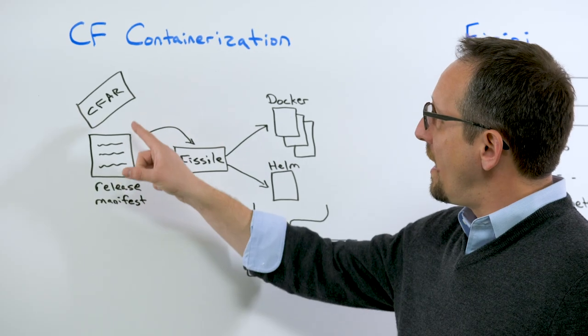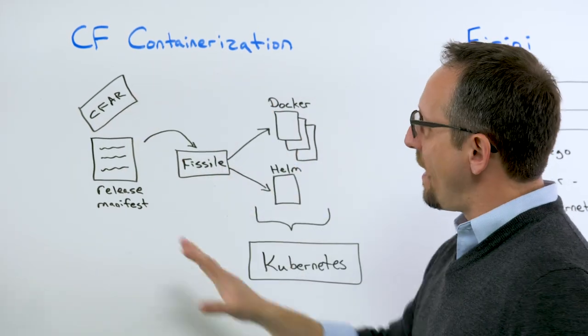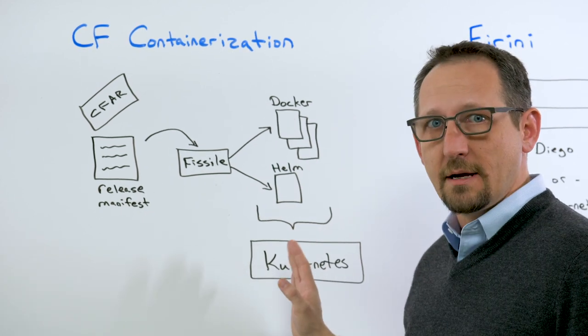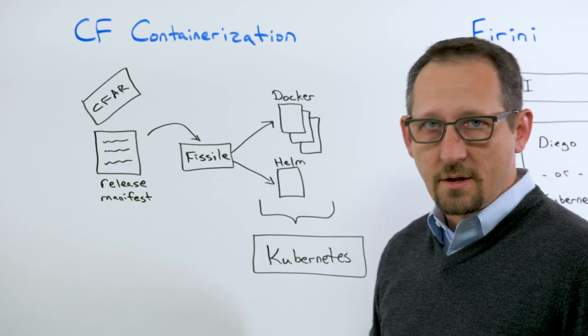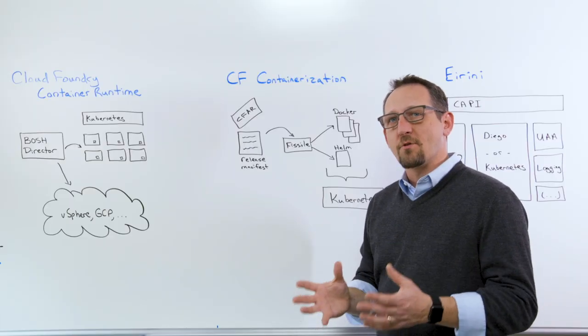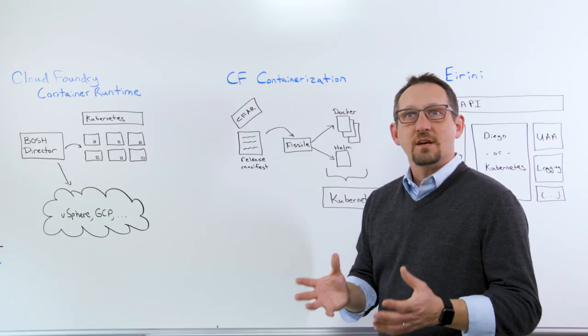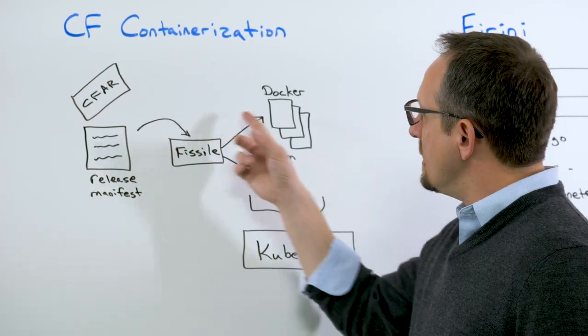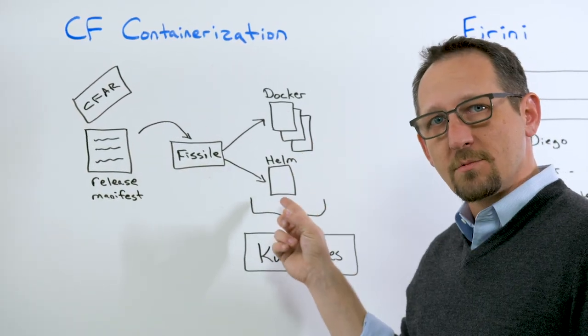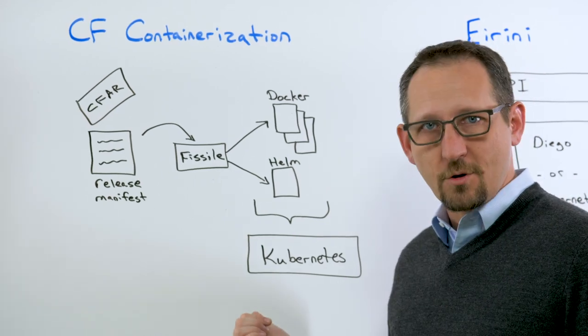Now, what's important about the CF Containerization effort is that while that's a general purpose idea, it's specifically trying to get the Cloud Foundry application runtime - the traditional platform as a service that everybody thinks of when you think of Cloud Foundry. It's trying to package that whole system into Docker images using Helm charts to deploy it on top of a Kubernetes cluster.